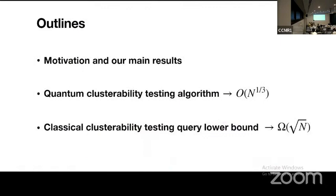Let's begin with the outline. First, I will introduce the problem — the clusterability testing problem — and I will show our two main results. The first result is that we provide a quantum algorithm to solve the testing problem. Our second result is that we provide a classical query lower bound for this problem.